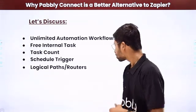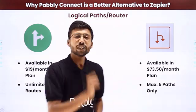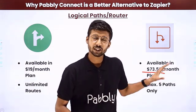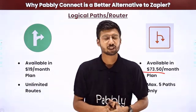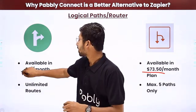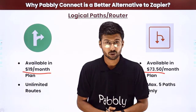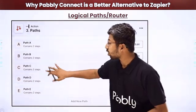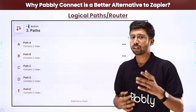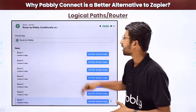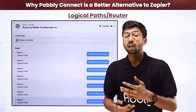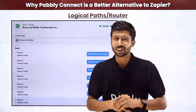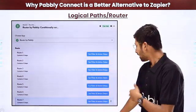The next point is logical paths and routers. In Zapier, you need a $74/month plan to access logical paths and routers. In Pabbly Connect, the router is available in every plan, starting from $19/month. Additionally, Zapier limits you to only five paths in a logical path router, whereas Pabbly Connect allows unlimited routes in your automation workflows with no such restriction.